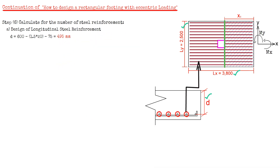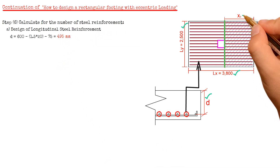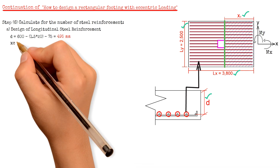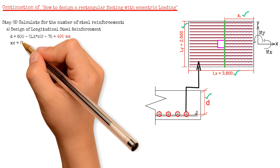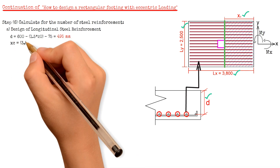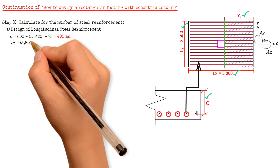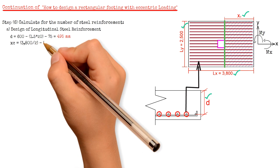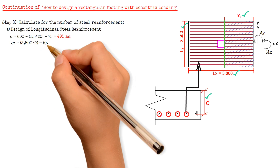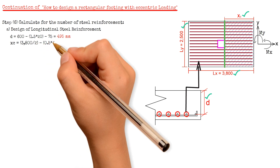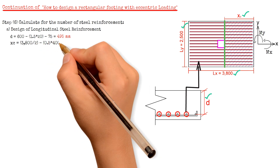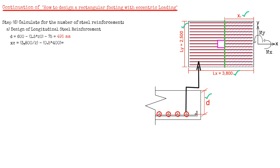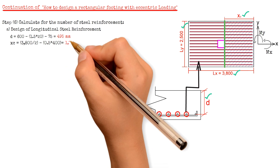Then we will calculate for x sub c, which equals length Lx 3800 mm divided by 2, minus 0.5 times cx 400 mm, and that gives us 1700 mm.